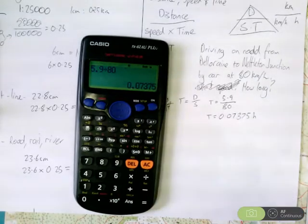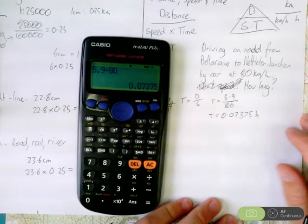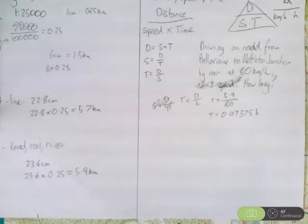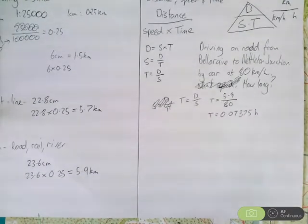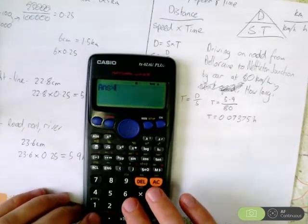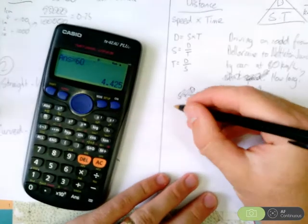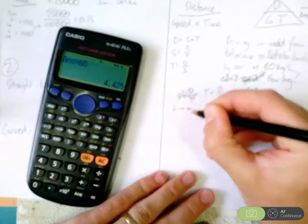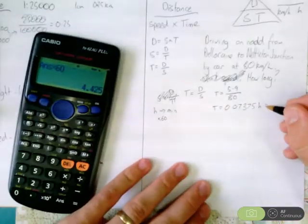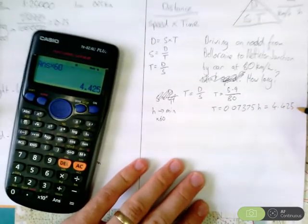Now, this isn't a sufficient answer. We need to convert it. So, what we need to do, is times it by 60, to get from hours to minutes, it times by 60. So we have 4.425 minutes.